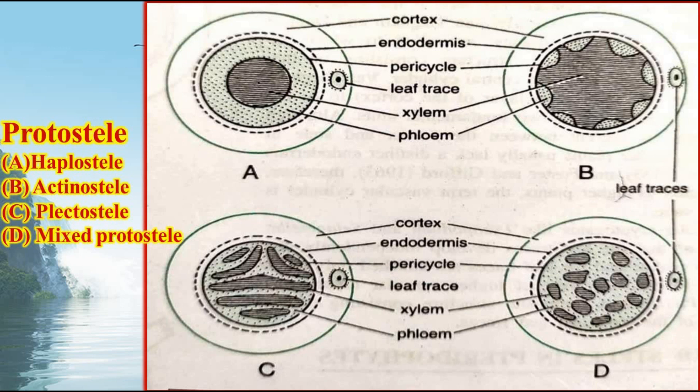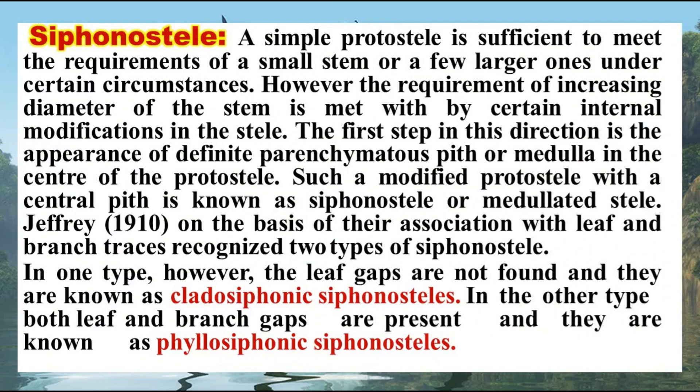In the diagrams, A is haplostele, B is actinostele, C is plectostele, and D is mixed protostele. Siphonostele is the next type of stele. The protostele evolved into siphonostele by the appearance of pith in the central region of the stele — by the appearance of pith in the center of the xylem.